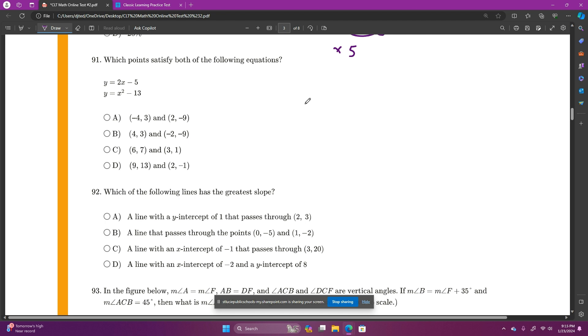And now, number 91. Which points satisfy both of the following equations? So, y equals 2x minus 5, y equals x squared minus 13. Both of these equations have the y's isolated, so there's something we can do. So, we can take this and make it equal to this. Because 2x minus 5 equals y equals x squared minus 13. They both equal y. So, we can just make them equal to each other.